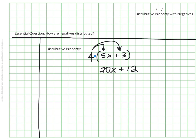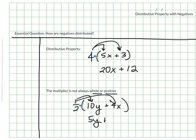But sometimes the multiplier is not a whole or a positive number. For example, maybe we have one half parentheses 10y plus 4x. We know that this means there's that invisible multiplication sign, and we would have to do just what we've done before. We would take one half of the 10y, which means we'd have 5y, and we would take one half of the 4x, which means we have 2x. So these would be equivalent.